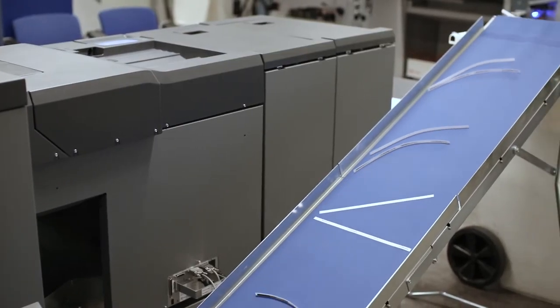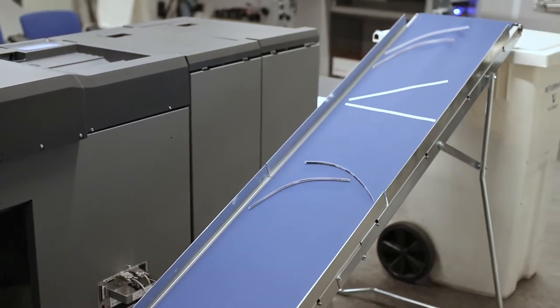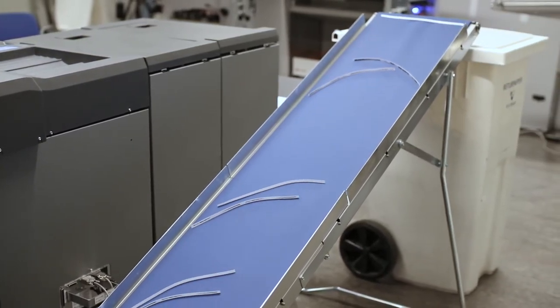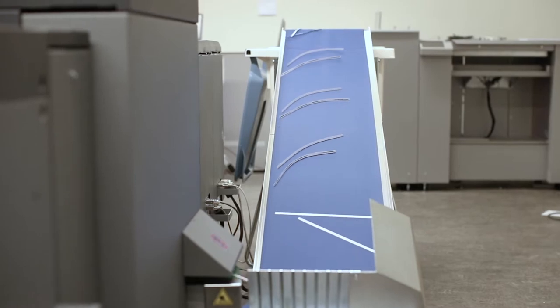The Trim Waste Conveyor attaches to the RCT module and is a simple, well-engineered module that transports trim waste upwards.